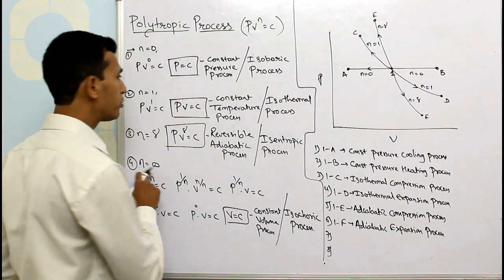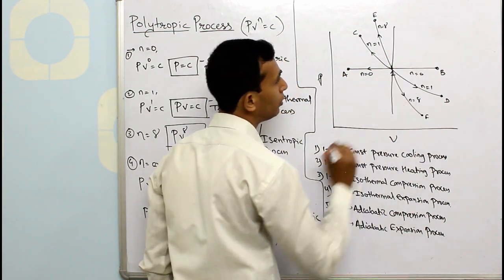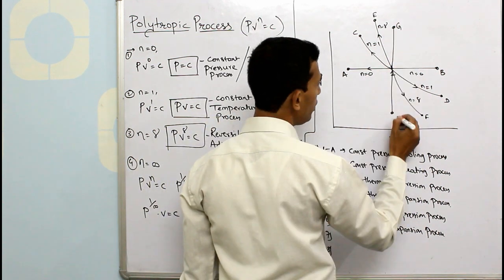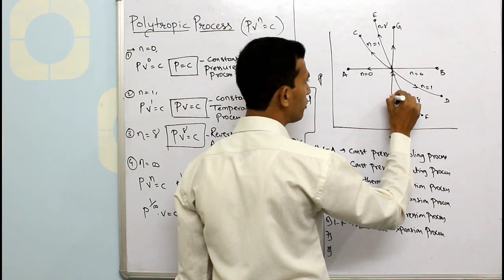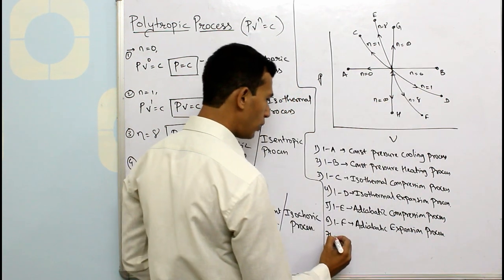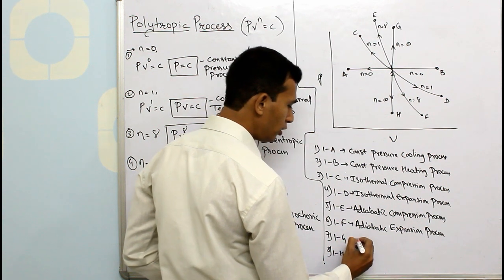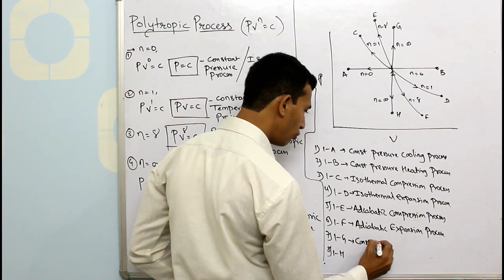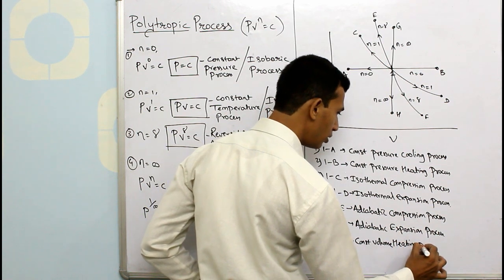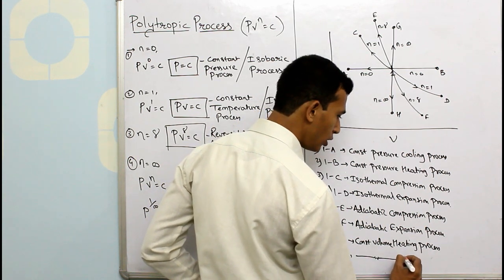For n equals to infinity, the constant volume process is represented as a vertical line on the PV diagram. Points G and H are marked. From 1 to G is the constant volume heating process, and from 1 to H is the constant volume cooling process.